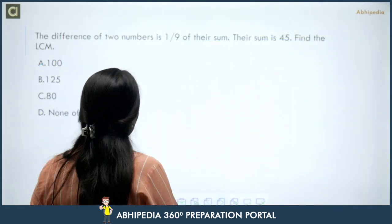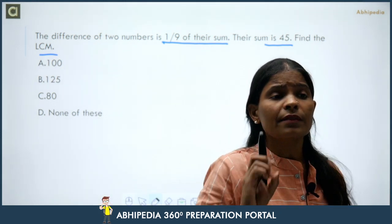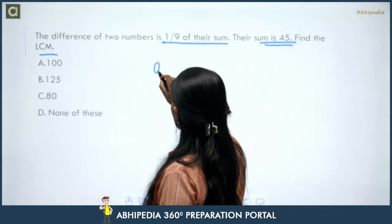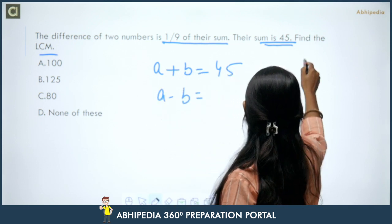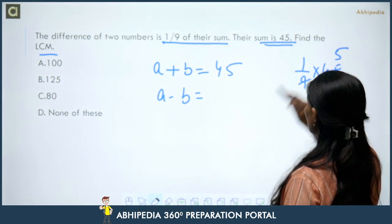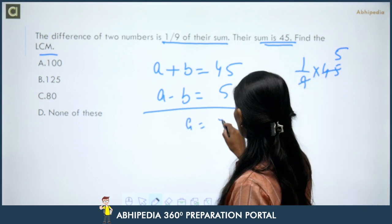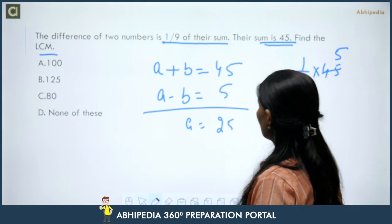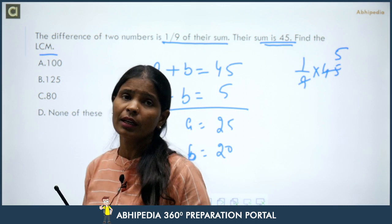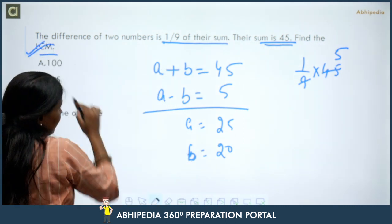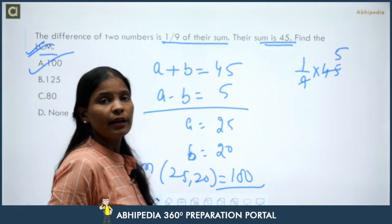Next question: the difference of two numbers is 1/9th of their sum, and their sum is 45. Find the LCM. One-ninth of 45 is 5, so the difference is 5. With sum = 45 and difference = 5, solving gives a = 25 and b = 20. The LCM of 25 and 20 is 100. So the answer is 100.